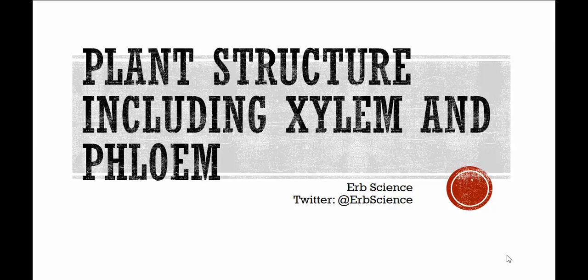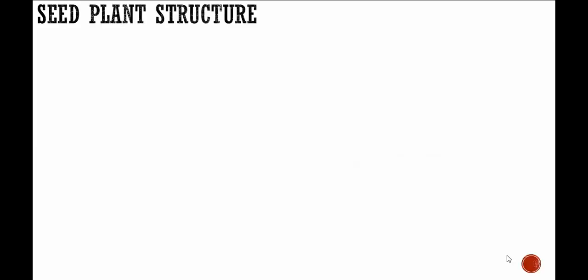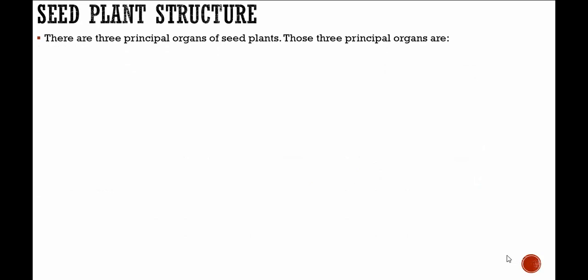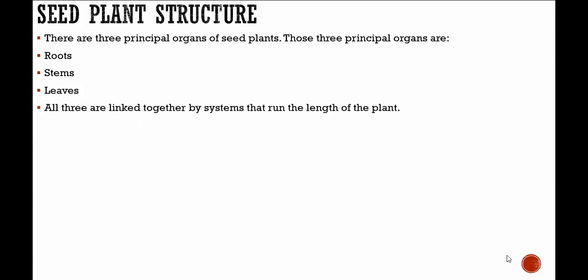Going over plant structure, including the xylem and phloem inside of plants. The seed plant structure has three principal organs: the roots, the stems, and the leaves. This is pretty much a review, something that everybody's familiar with.